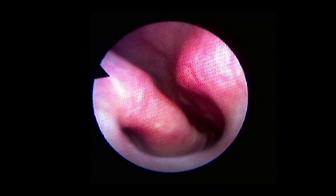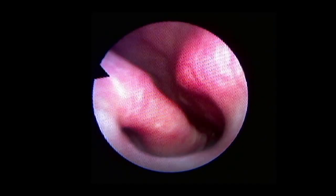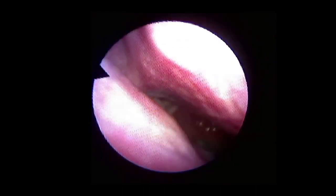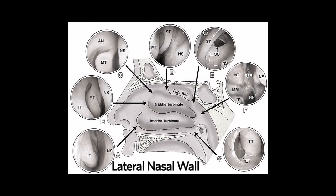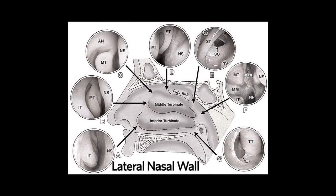As the flexible scope enters the right nasal cavity, one notices the nasal septum on the medial side and the inferior turbinate on the lateral side, and the middle turbinate on the lateral side. The lateral nasal wall is composed of the inferior, middle, and superior turbinates.